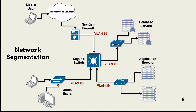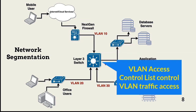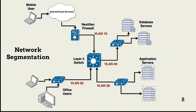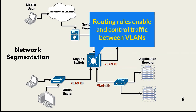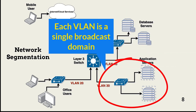VLAN access control lists, or VACLs, configured in the Layer 3 switch control traffic access. For example, if an office user tries to directly access a database server, the VACL for VLAN 40 will block the traffic. However, access is allowed to VLAN 30. Access across VLANs is enabled with routing rules and access control lists configured in the Layer 3 switch. Broadcast traffic is limited to the VLAN on which the broadcast was initiated, and devices on the same VLAN can be prohibited from speaking with each other.